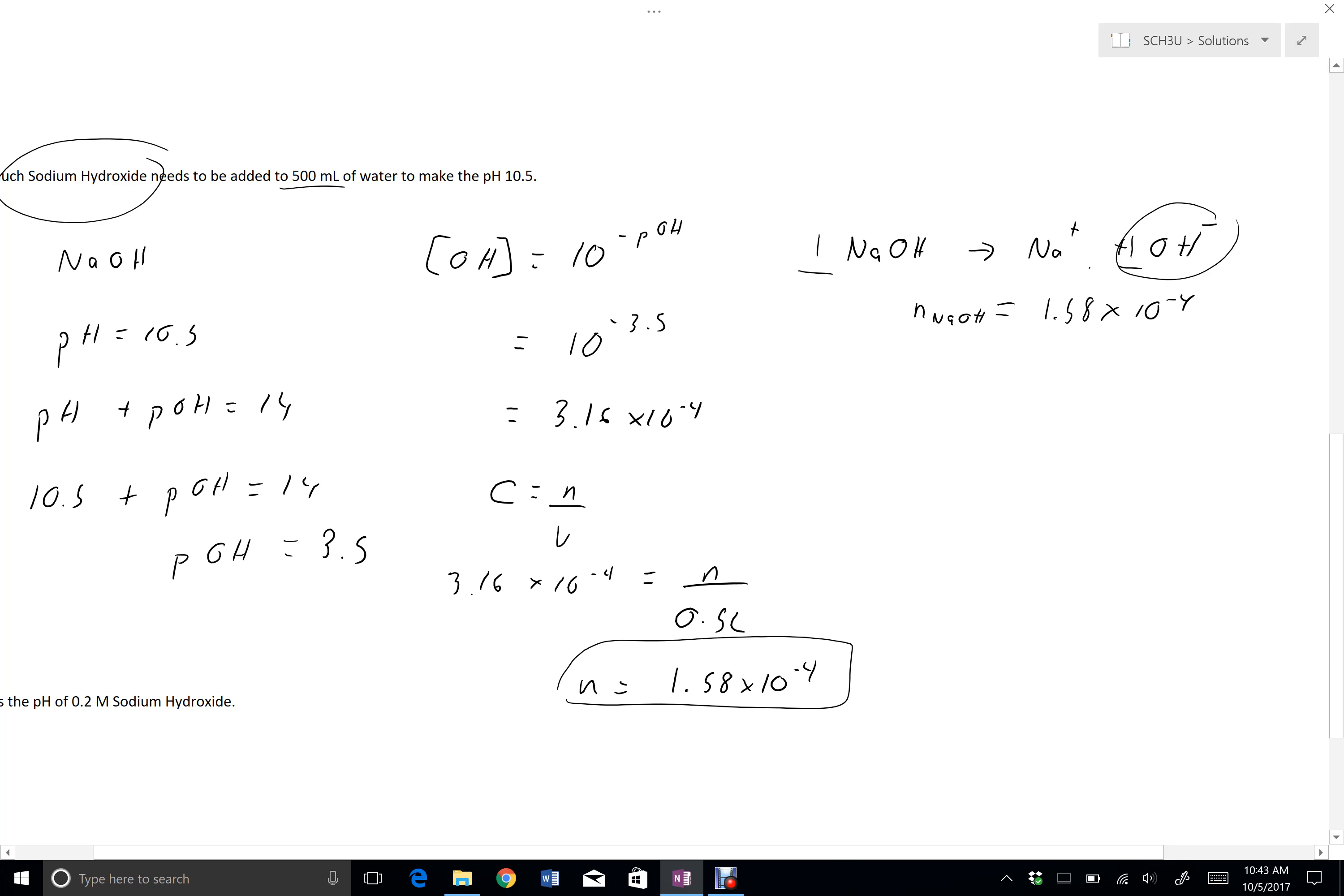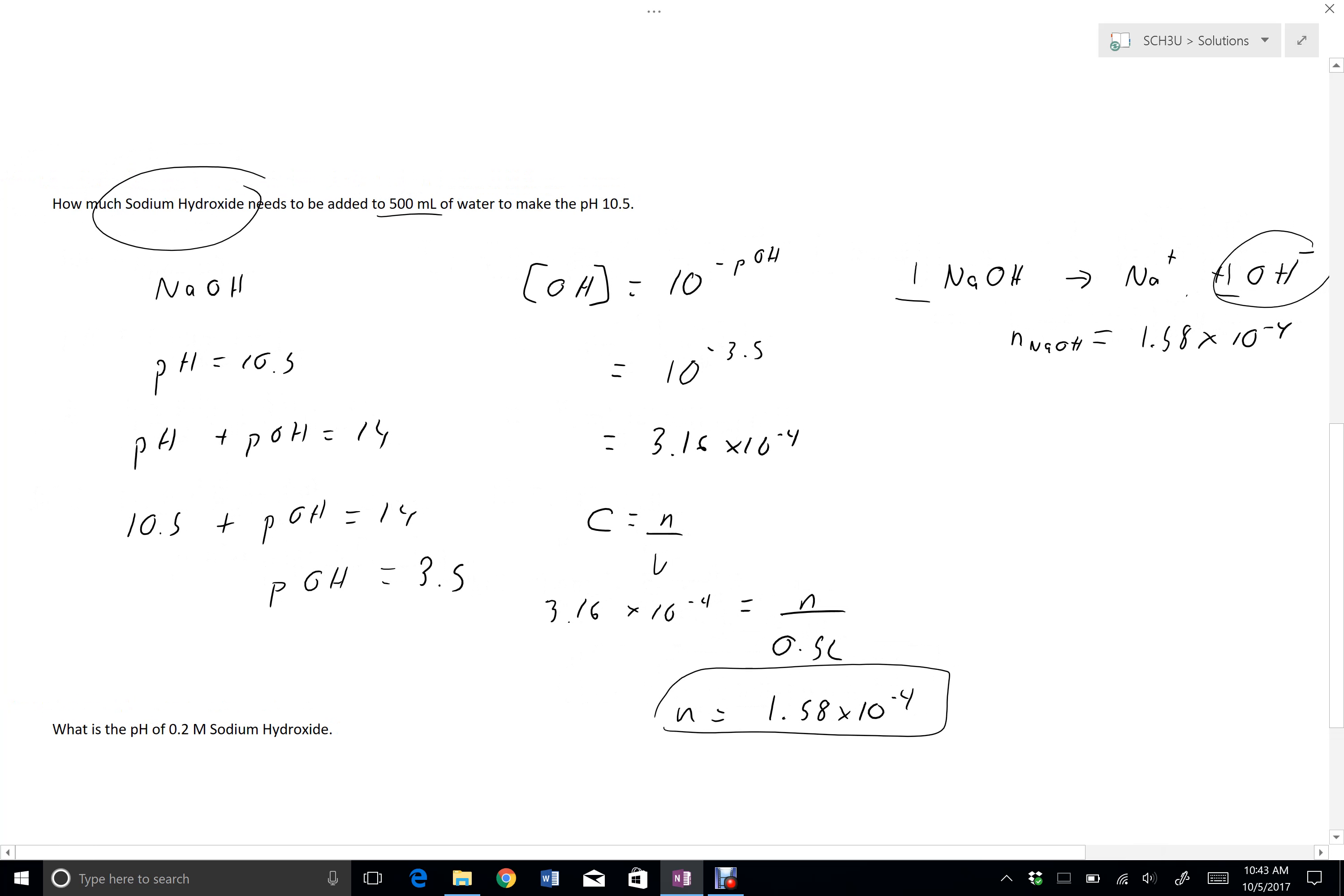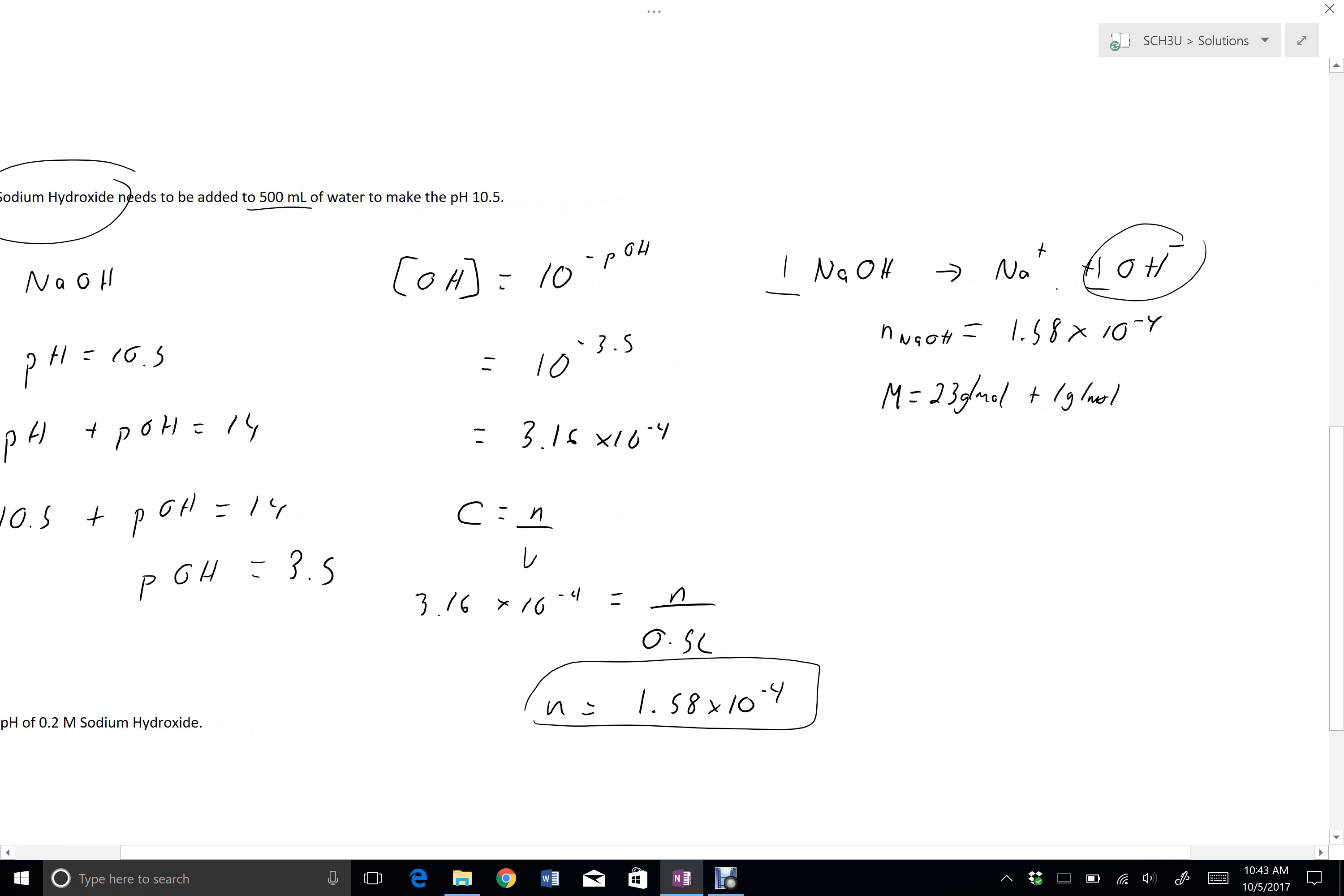Now I can actually get the mass. I think it asked for mass. It says how much, so I'm going to assume they want mass. So my molar mass for sodium hydroxide is 23 grams per mole plus 1 gram per mole from the hydrogen plus 16 grams per mole from the oxygen. And that works out to 40 grams per mole.